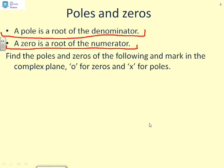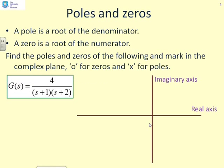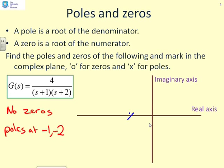Let's give some examples. We mark zeros with a circle and poles with a cross. Here's the first example: g(s) equals 4 over (s+1)(s+2). This has no zeros, because the numerator is a zeroth-order polynomial with no roots. The denominator is (s+1)(s+2), so there are poles at minus 1 and minus 2. I mark these in the complex plane with crosses at minus 1 and minus 2.